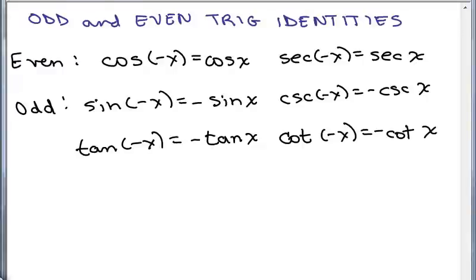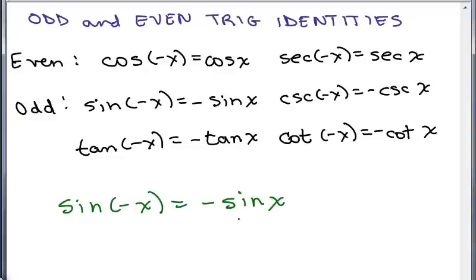How do we use these? Any time you see a negative number in the parentheses, you're going to rewrite it. For instance, any time you see the sine of negative x, you write that as negative sine of x. Any time you see the cosine of negative x, you rewrite it as simply the cosine of x.